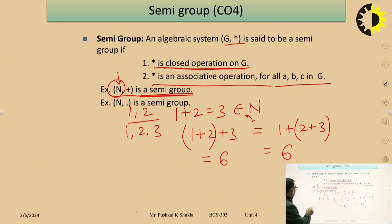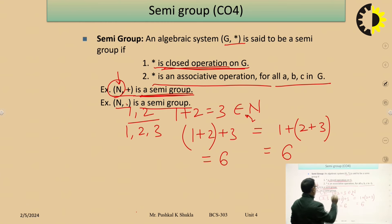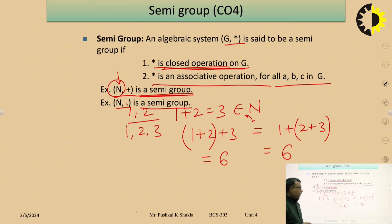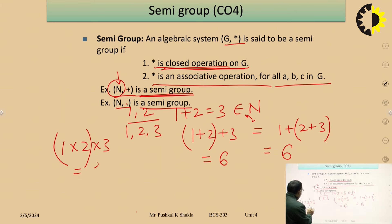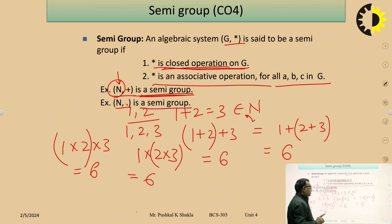A second example: (N, ·) — that is, natural numbers under multiplication — is also a semi-group. If you take any two natural numbers, their product is also a natural number, so it holds the closure operation. And for three numbers 1, 2, 3: (1×2)×3 = 6, and 1×(2×3) = 6 as well, so it holds the associative operation. Therefore (N, ·) is a semi-group.